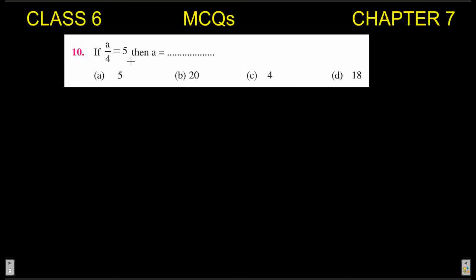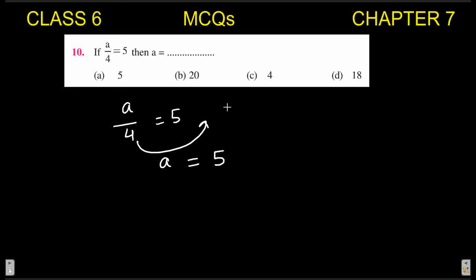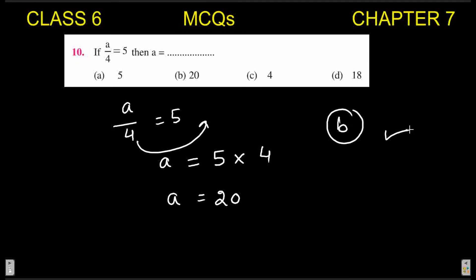Next MCQ: if a/4 = 5, then a = ? Using the transposition method: a = 5, and 4 moves from the left-hand side denominator to the right-hand side as a numerator (multiplying). So a = 5 × 4 = 20. Twenty is in option B, so B is your correct answer.